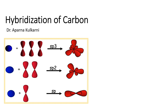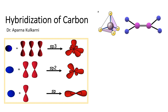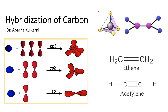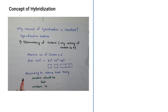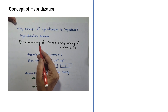Do you wonder why methane is tetrahedral but ethylene is planar? Why ethylene has a double bond but acetylene has a triple bond? Hybridization is a concept in chemistry which gives answers to all such questions. Hello friends, I am Aparna Kulkarni. In this video we'll discuss hybridization of carbon.